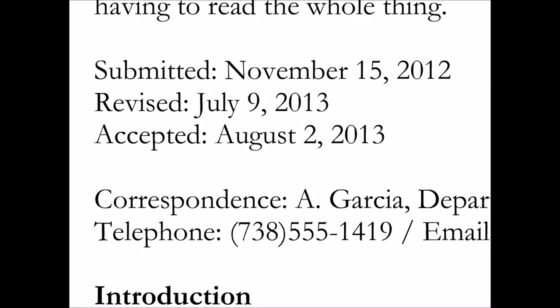If you see a series of dates, these correspond with the peer review process. This way you can see when the article was first submitted, revised, and finally accepted. This also shows you how slow the peer review process is, often taking months and sometimes years.